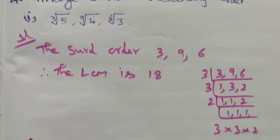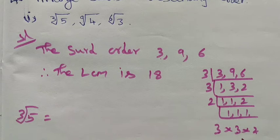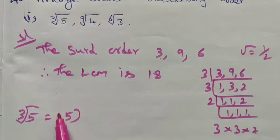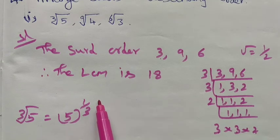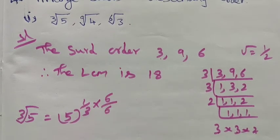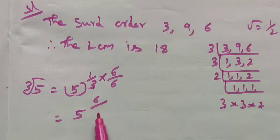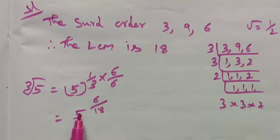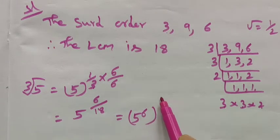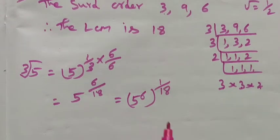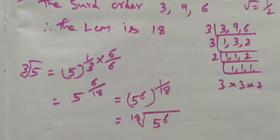The first root is cube root of 5. We know that cube root means 5 to the power 1 by 3. Now we want to make it as 18th root — multiply and divide by the same number 6. Then 1 × 6 = 6 divided by 3 × 6 = 18. This term equals 5 power 6, whole to the power 1 by 18. So this is the 18th root of 5 to the power 6, where 5 power 6 means 5 × 5 × 5 × 5 × 5 × 5.